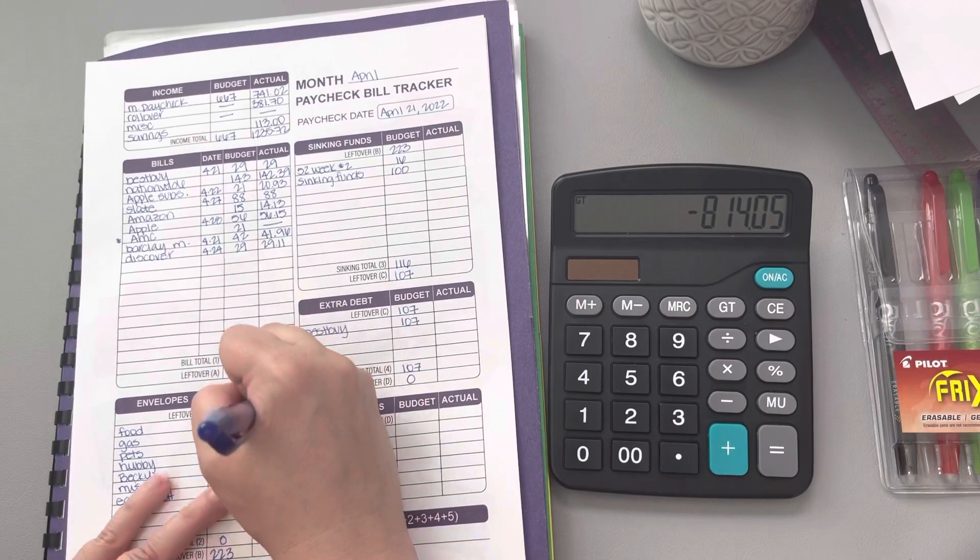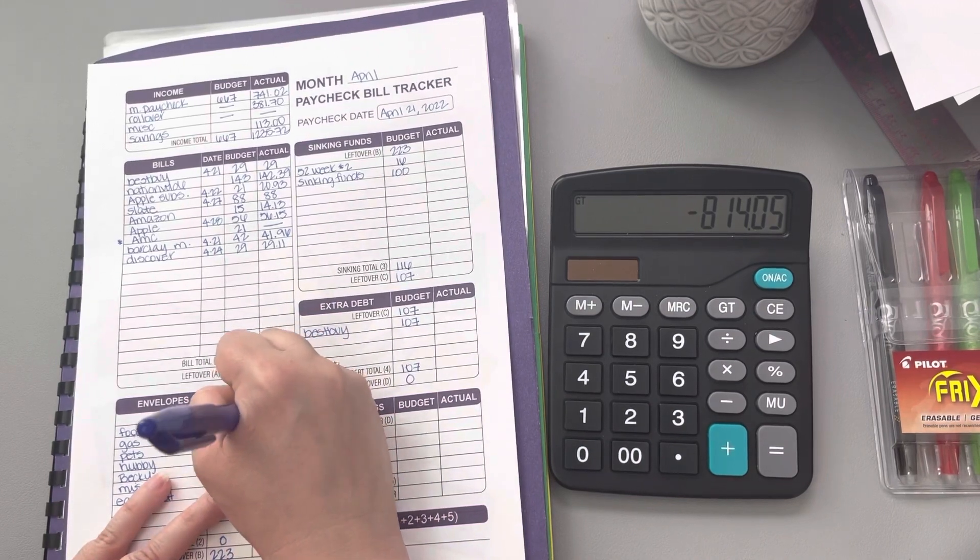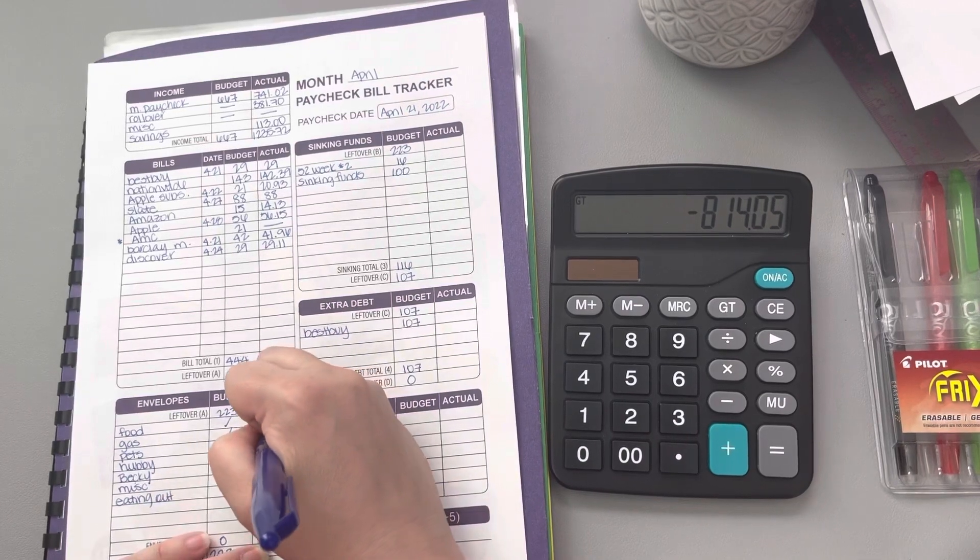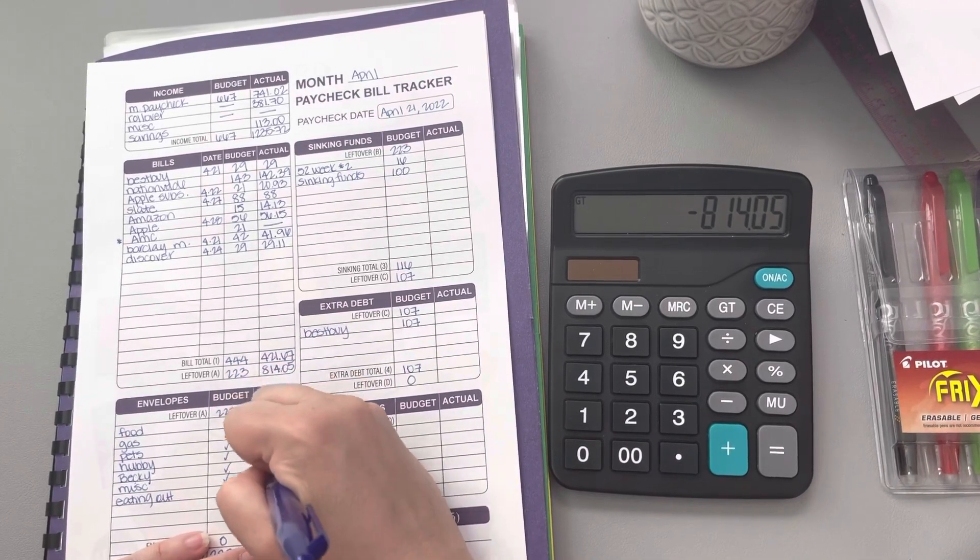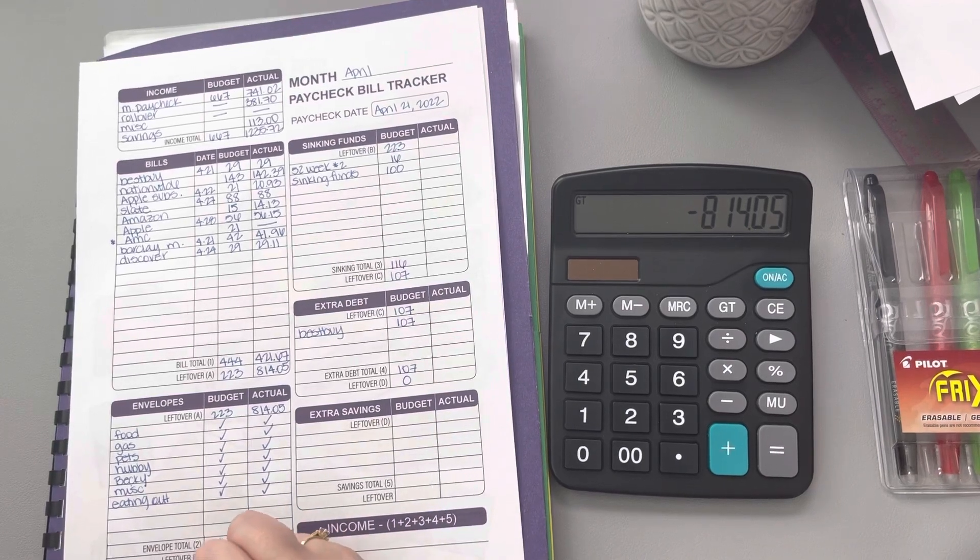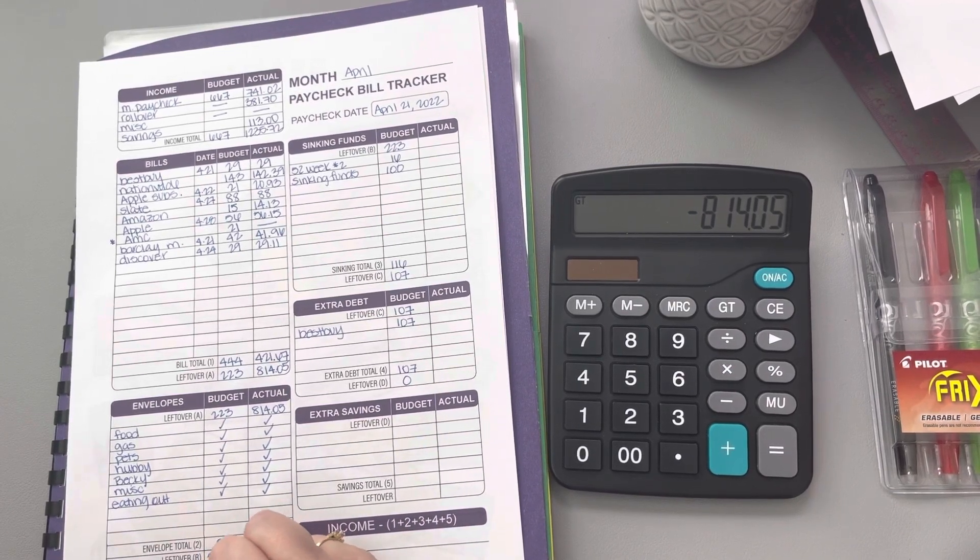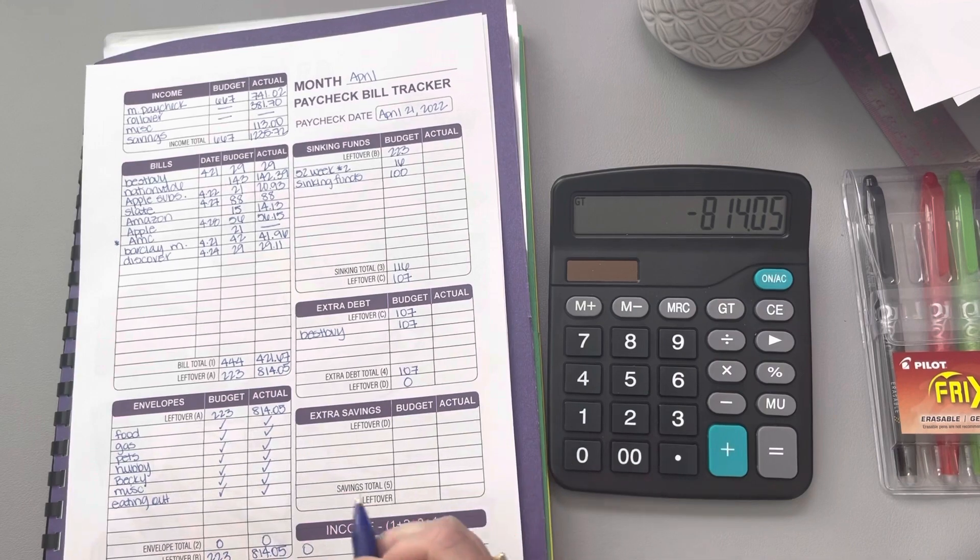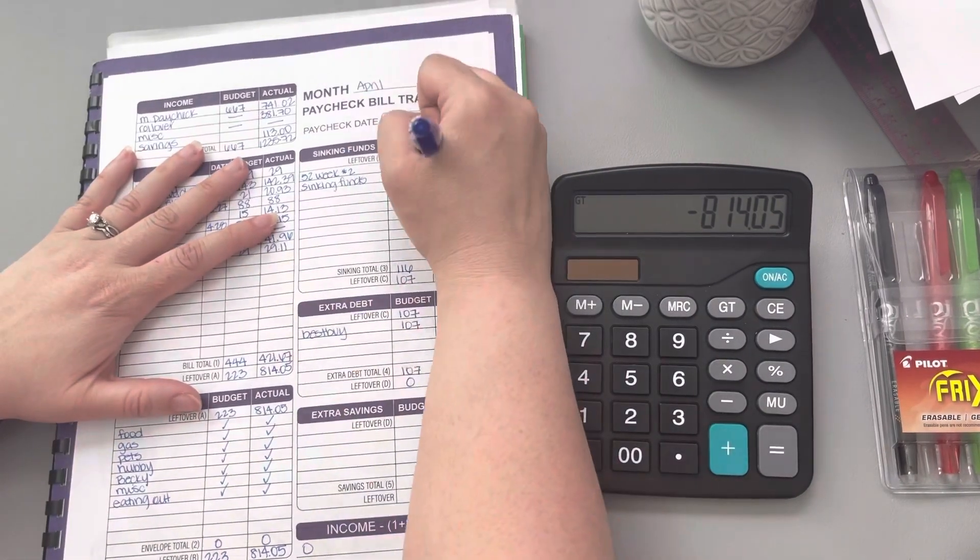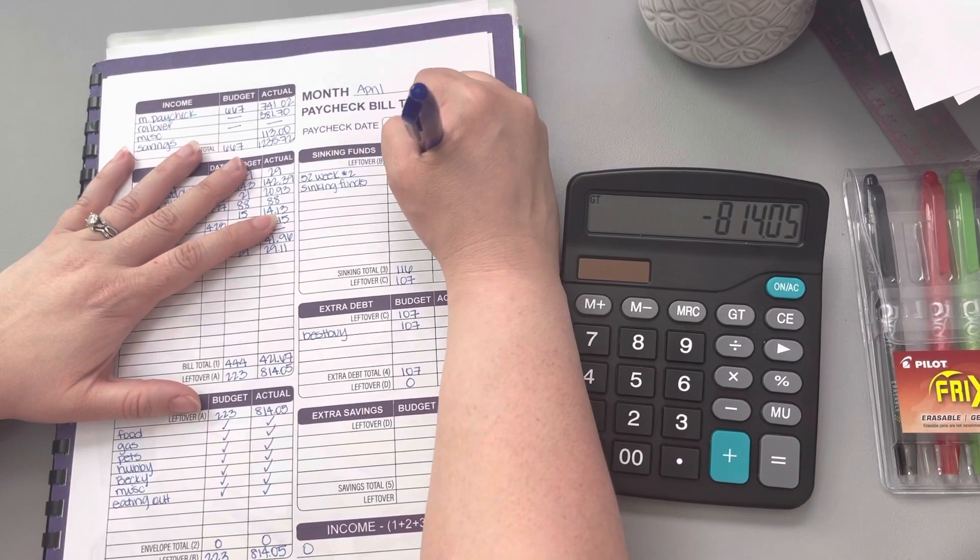As I had mentioned before, we've already met our variable envelopes, so that is going to be equal to zero. And that $814.05 gets added right here.